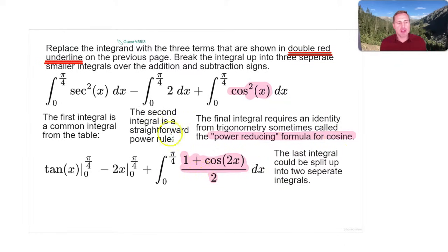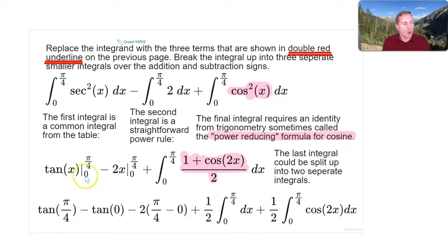Now there's a couple ways to do this last integral, but I think the easiest way is to probably just break it up into two separate integrals. Again, you could break this up over addition, because integrals can be broken up over addition or subtraction. So we start using the fundamental theorem of calculus for tan(x) and for -2x. We put in π/4 for the upper bound, we put in 0 for the lower bound, and we subtract them.